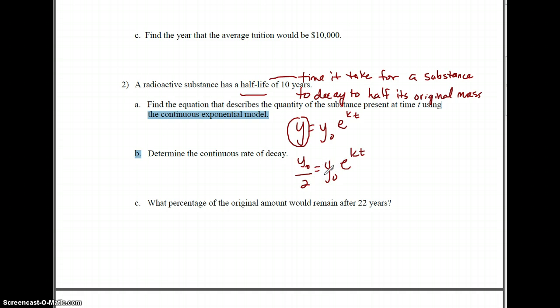If we wanted to solve for it, we would divide y-naught over, and these actually simplify out. We have one-half equals e to the kt. We could take the log of both sides, so ln of one-half equals kt. We would divide by k, and that's our time. So our half-life is ln of one-half over k. We need to find k. But this is what we're talking about when we talk about half-life. It's how long does it take for there to be half as much as we started with.